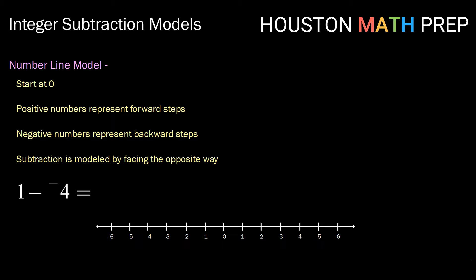If we want to model one minus negative four, we'll bring whatever little creature we're using to zero. The default is for our creature to face to the right, to face towards the positive values. We need to start with one. That means facing to the right, we will take one forward step. Now, because we're going to perform subtraction, he needs to turn around, and then we need to take negative four steps. So that means he's going to take backward steps, four of them. One, two, three, four. Now we note where we ended up, in this case at positive five. So one minus negative four is five.